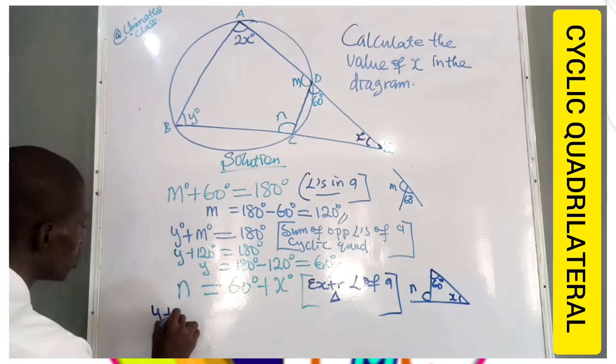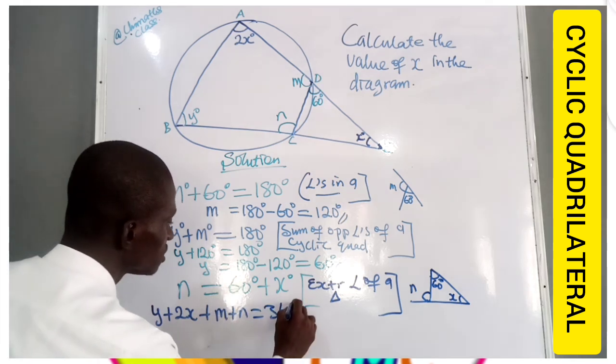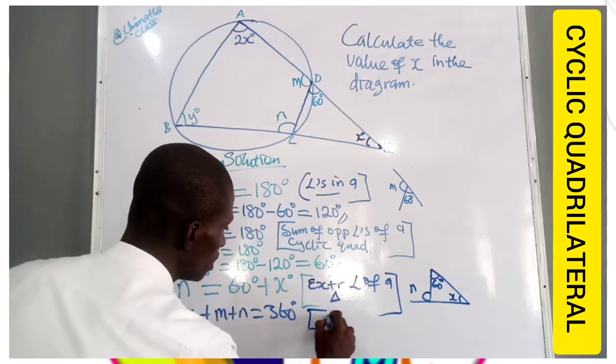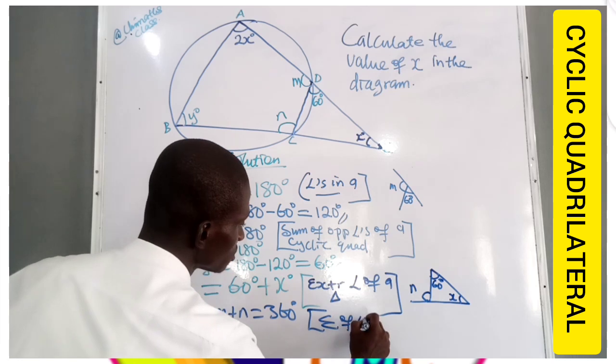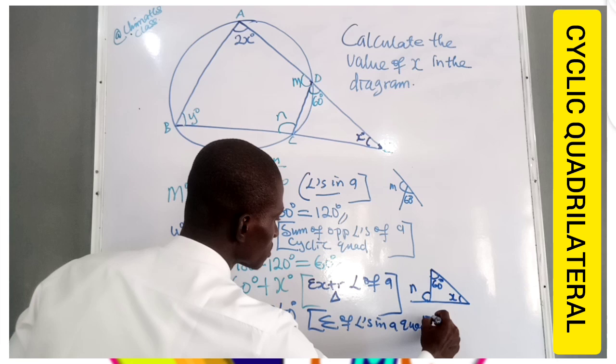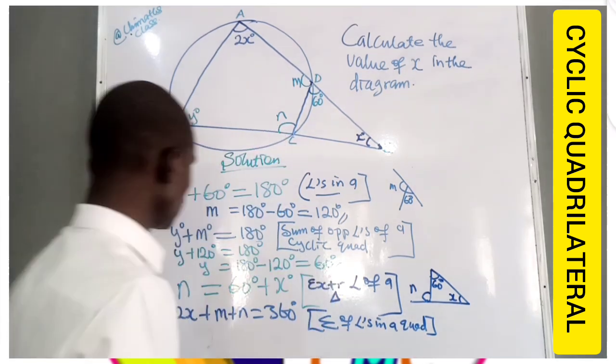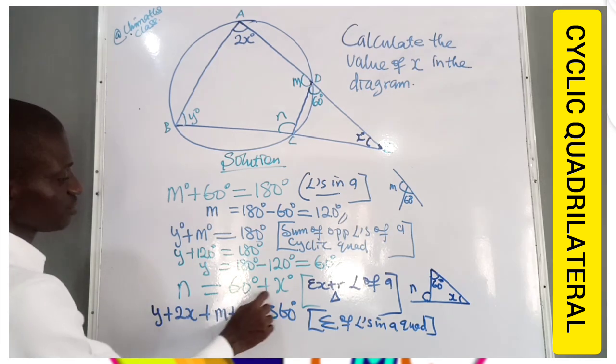Y plus 2X plus N plus N should give us 360 degrees. Sum of angles in a quadrilateral should be 360 degrees. But then this N is 60 plus X.